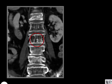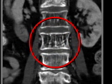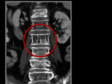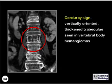What sign is this? This is the corduroy sign, which are the vertically-oriented, thickened trabeculae seen in hemangiomas of vertebral bodies.